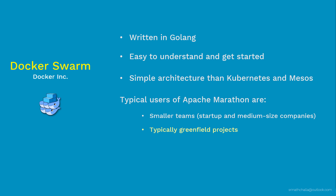Docker Swarm is extremely easy to set up — it takes about five to ten minutes to set up a Swarm cluster. One of the best things about Docker Swarm is the zero-to-dev experience. It is super easy and mainly driven by developer teams who need to deploy new products quickly.